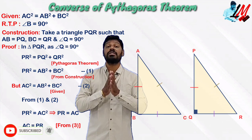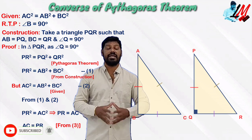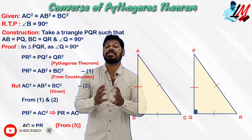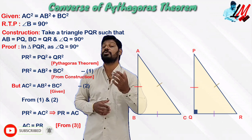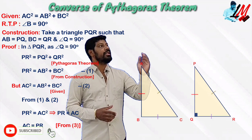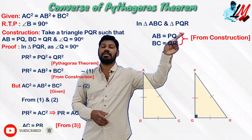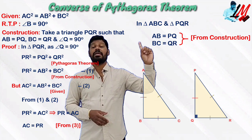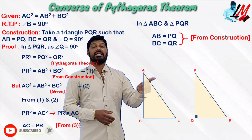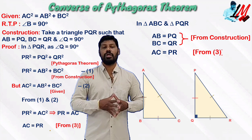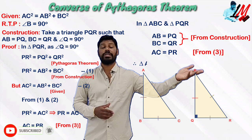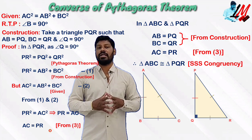Now we have two triangles. We can state: AB = PQ and BC = QR according to construction, and AC = PR from equation 3. Since all three pairs of corresponding sides are equal, triangle ABC is congruent to triangle PQR by SSS congruence.